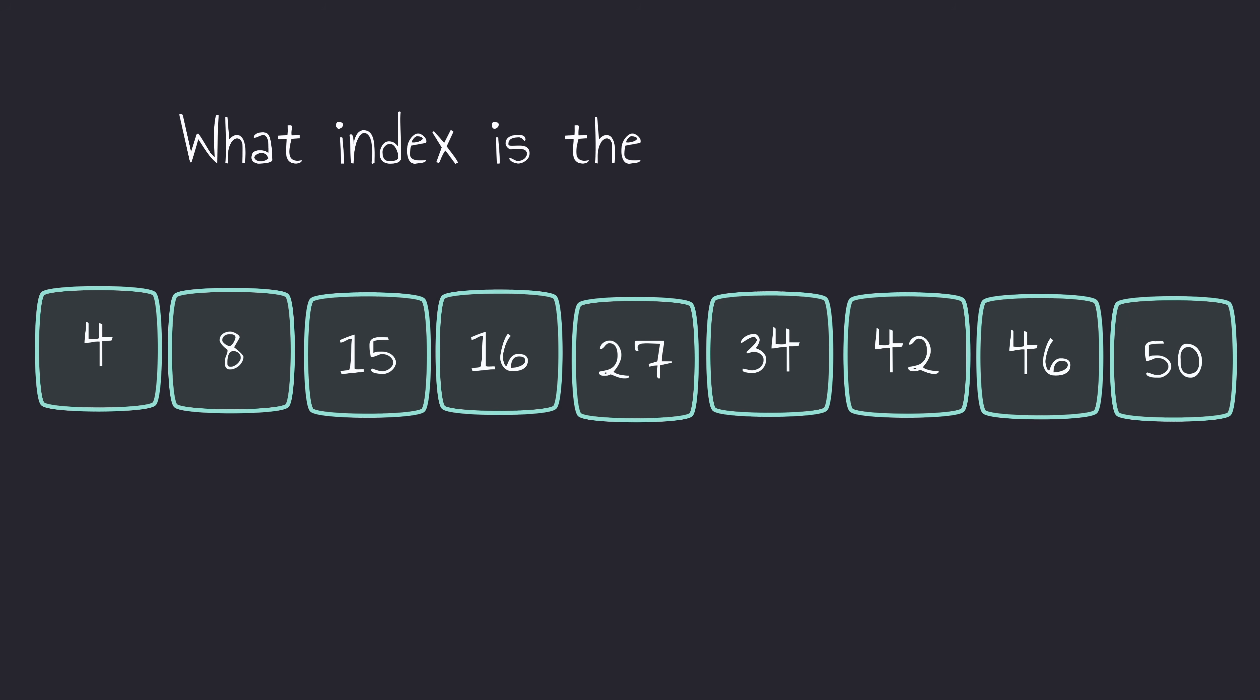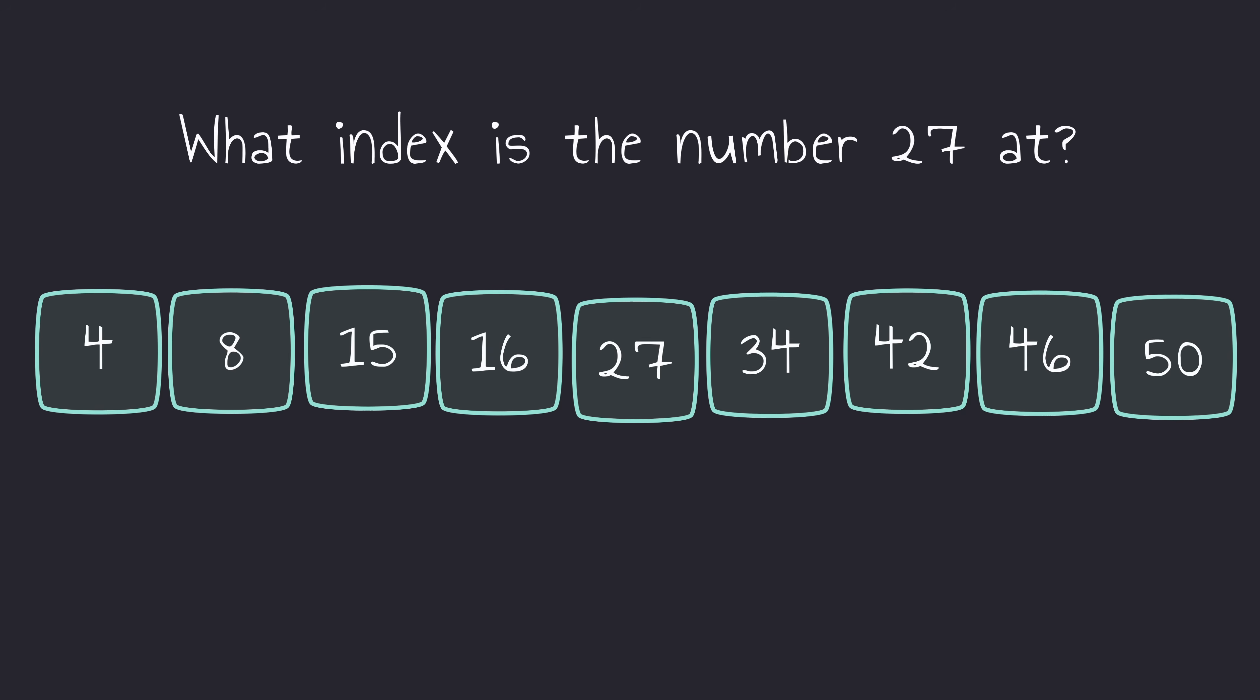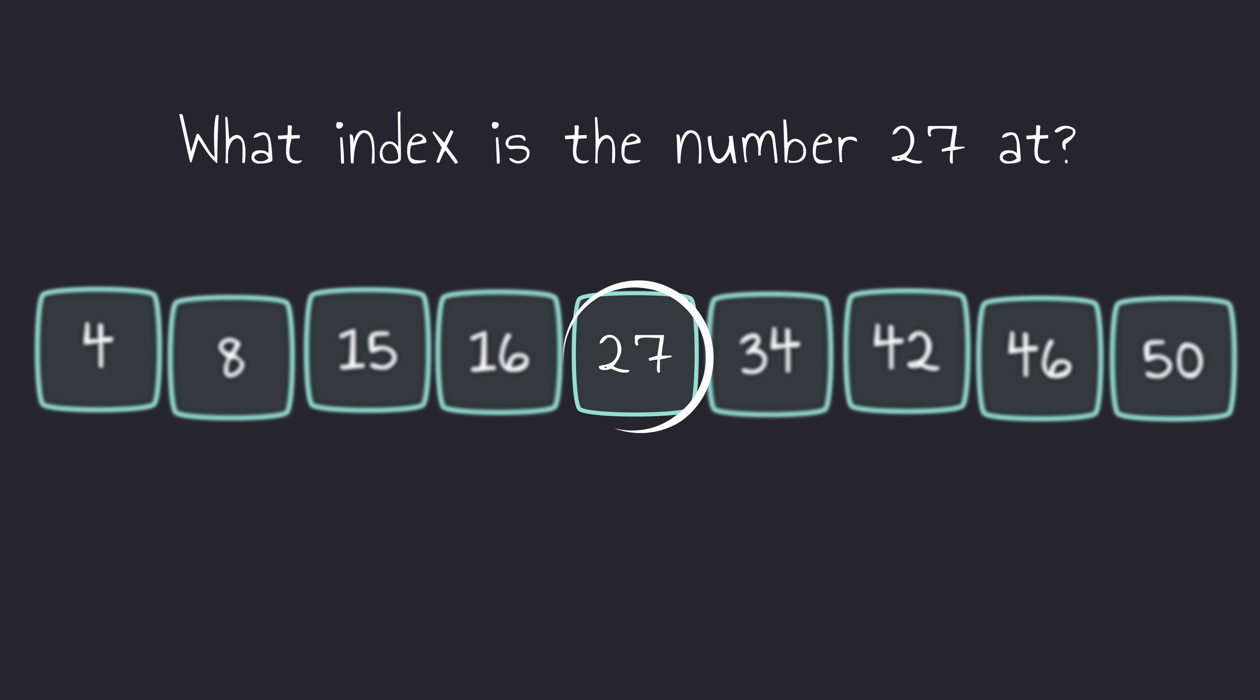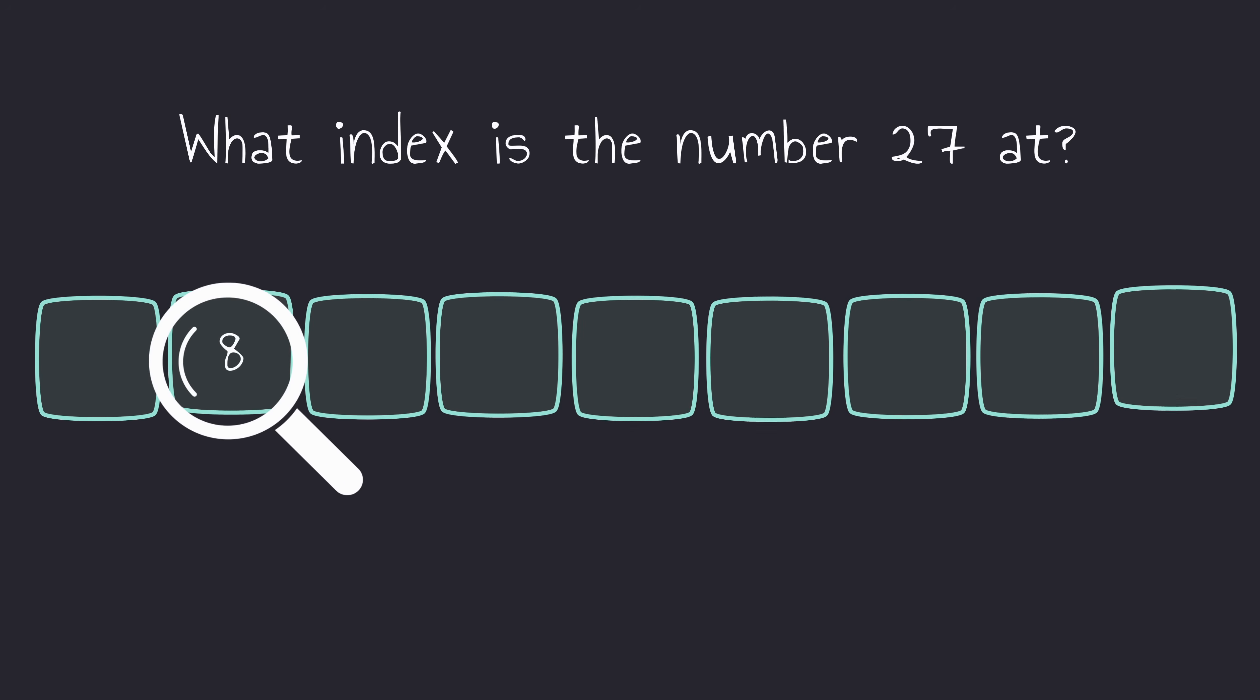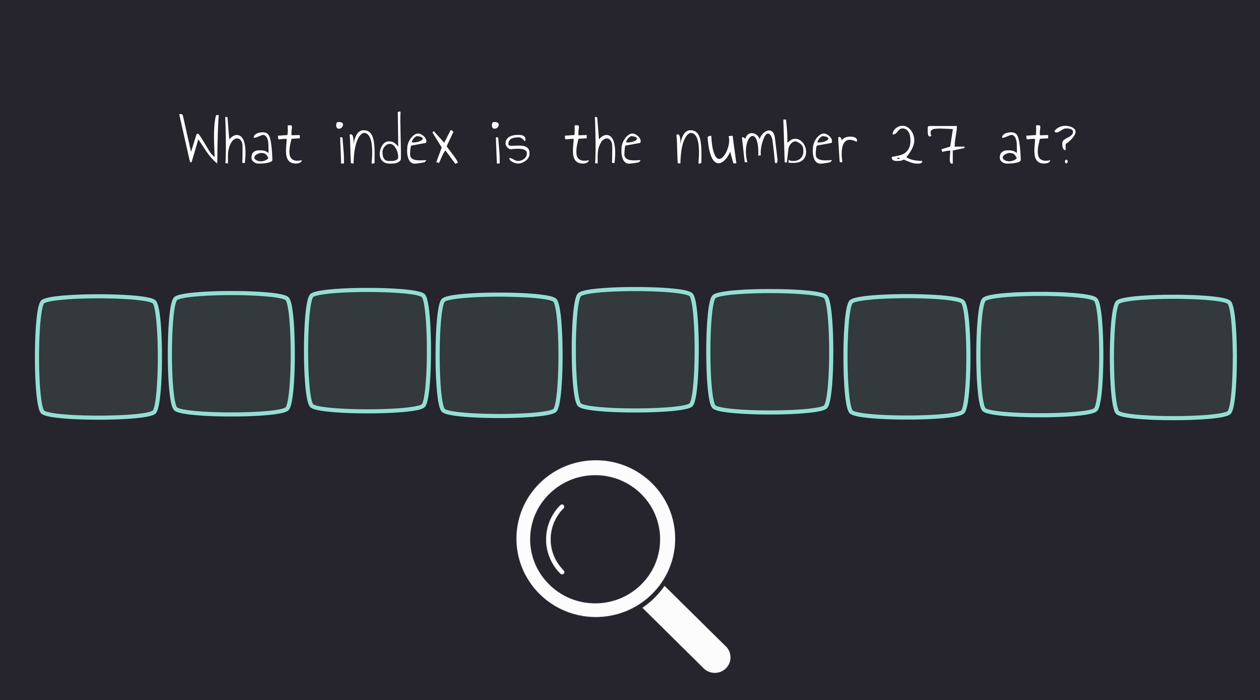If I asked you to tell me what index the number 27 is at, you could probably figure this out pretty easily by just looking at it. But what if you could only look at one number in the array at a single time? How would you figure out the index then?